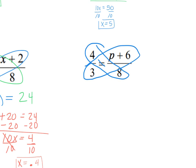So I do 3 times p plus 6. And that's equal to 4 times 8. What's 4 times 8? 32. Distribute your 3. Angry bird it, angry bird it. 3 times p is 3p. 3 times 6 is positive 18. And that's equal to 32.